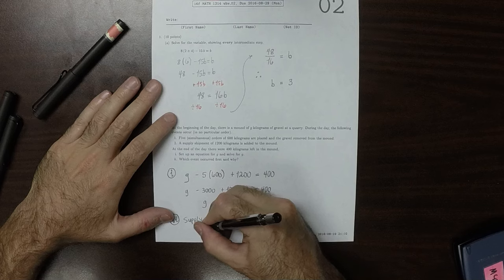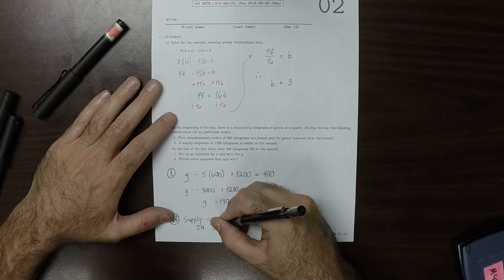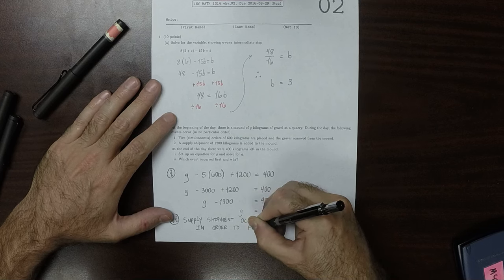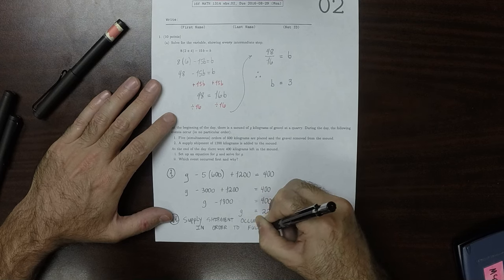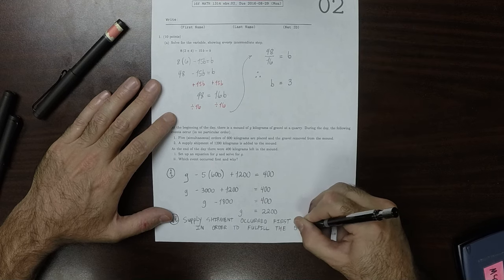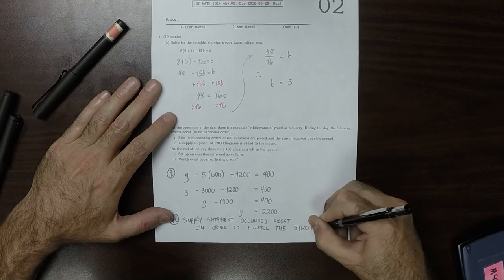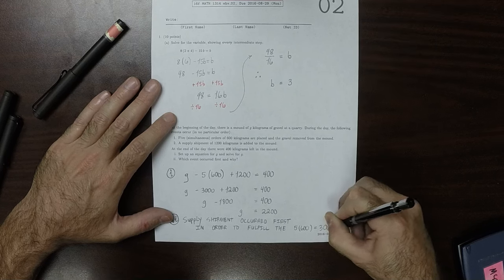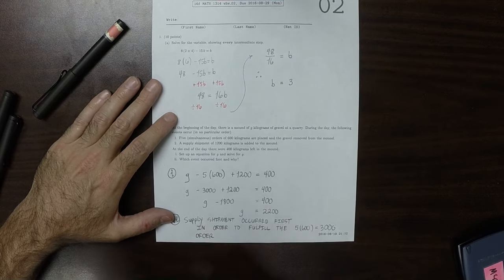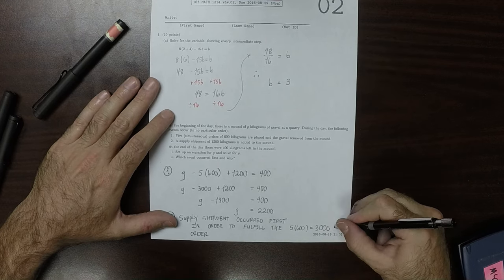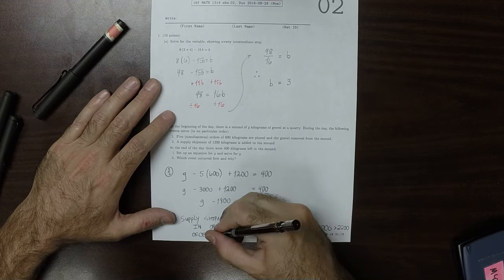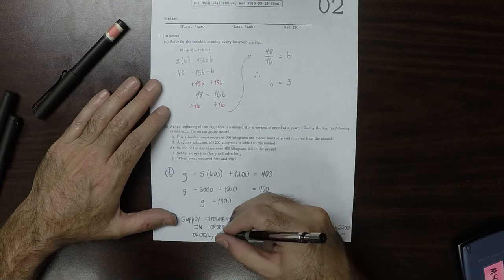So in order to fulfill the 5 times 600 equal to 3,000 order, which is greater than 2,200, the initial amount, we must have gotten supplied first.